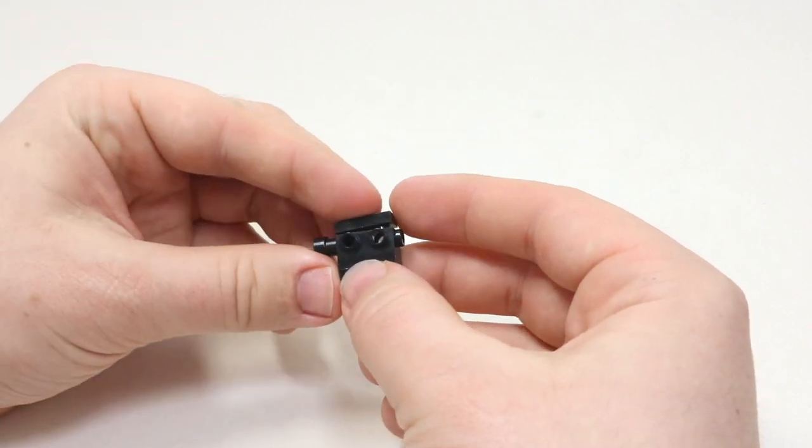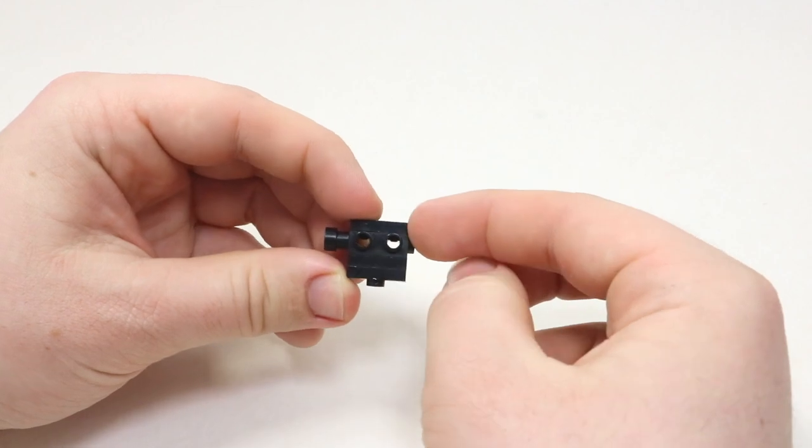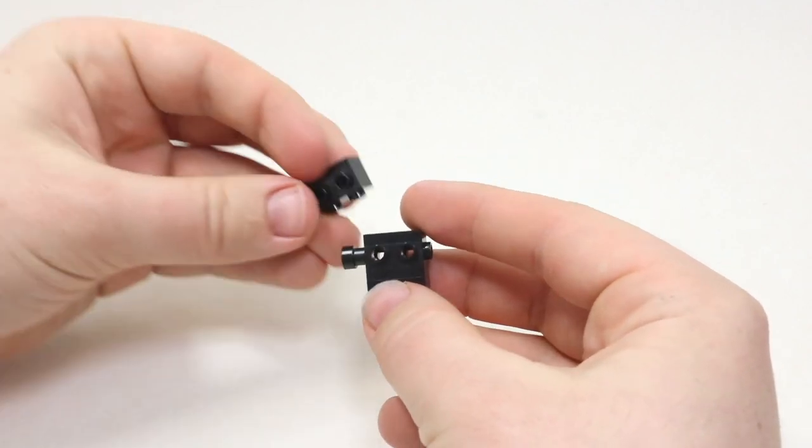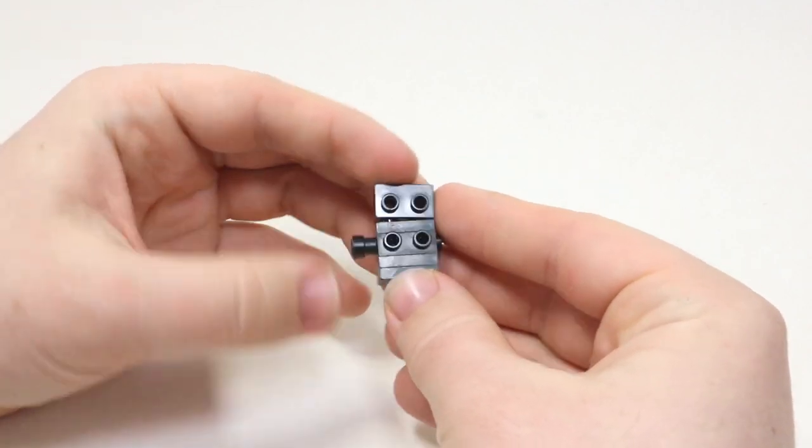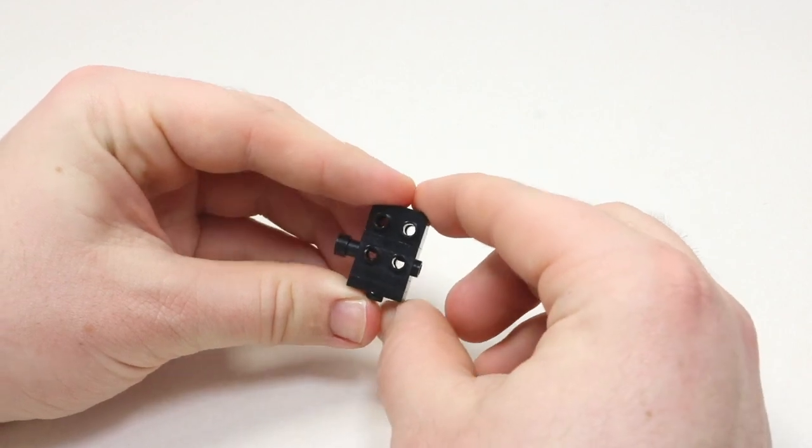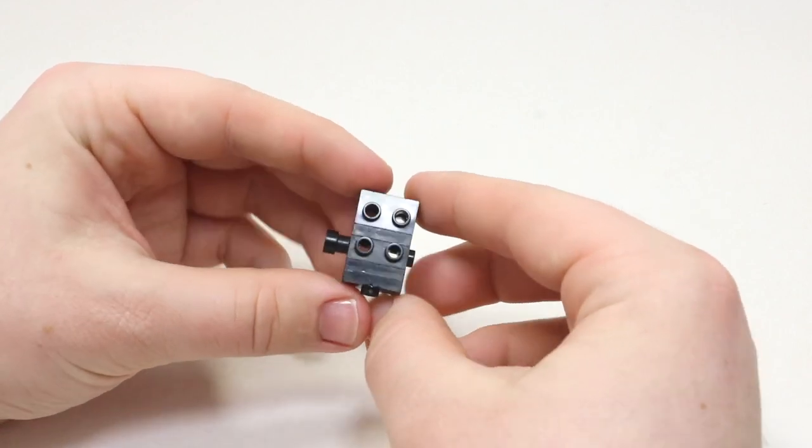From there, you're going to take one of the 1x2 bricks, add it here in between, right after that really weird piece that I was talking about, and then on top you're going to add a 1x2 brick with studs on the side. So this is what your camera should be looking like so far.